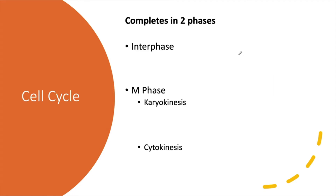The cell cycle consists of two phases. The first is interphase — think of this as a preparatory phase leading to a doubling of the genome, or twice the number of chromosomes. Interphase is made up of three sub-phases: G1 (gap 1 phase), the S phase (synthesis phase), and G2 (gap 2 phase).